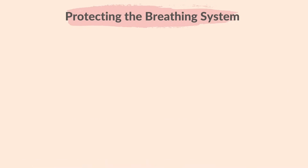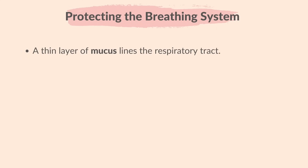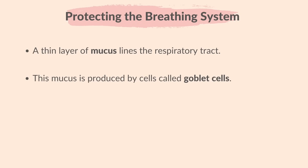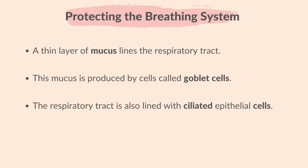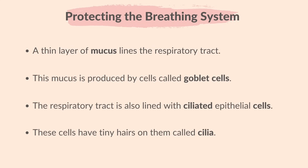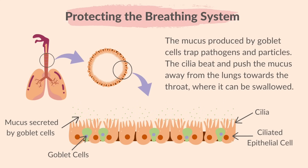Finally, let's learn how the breathing system is protected from pathogens and particles. A thin layer of mucus lines the respiratory tract, produced by cells called goblet cells. The respiratory tract is also lined with ciliated epithelial cells, which have tiny hairs called cilia. The mucus produced by goblet cells traps pathogens and particles. The cilia constantly beat and push the mucus away from the lungs towards the throat, where it can be swallowed — this destroys pathogens and protects the lungs from them.